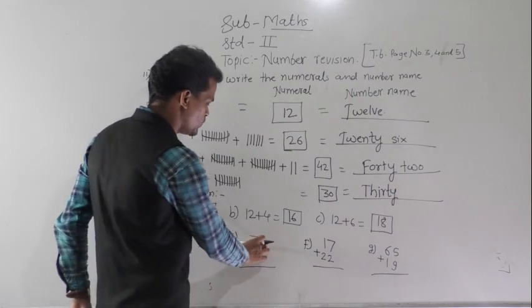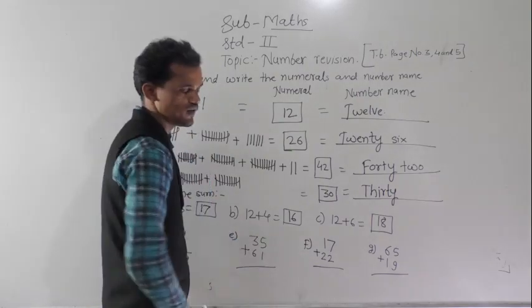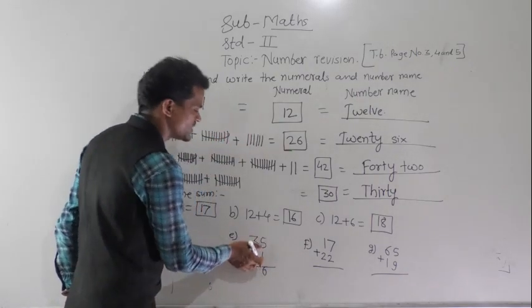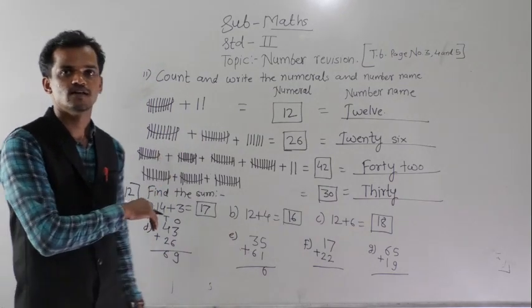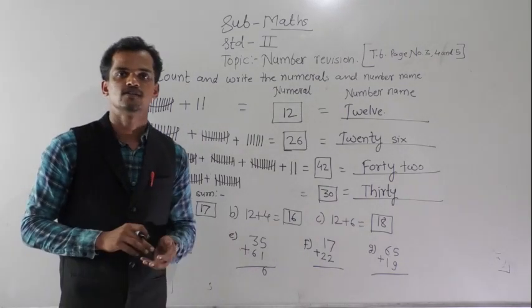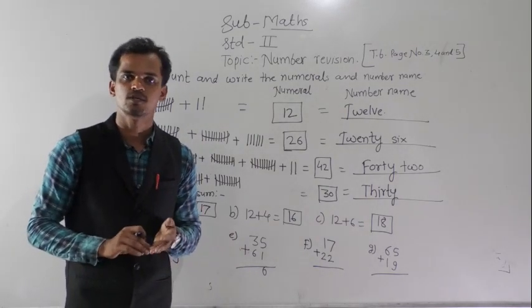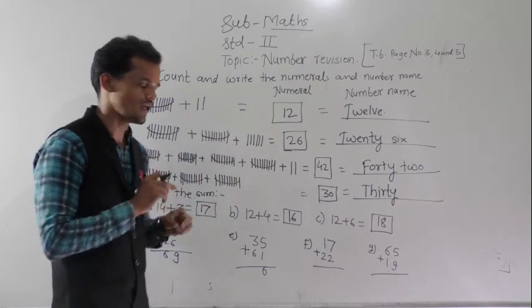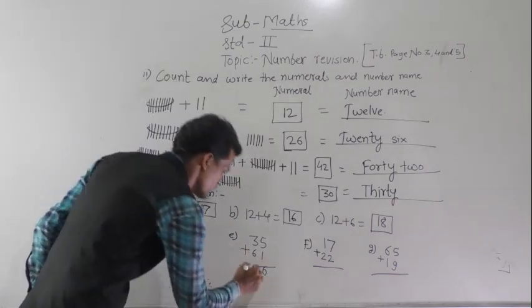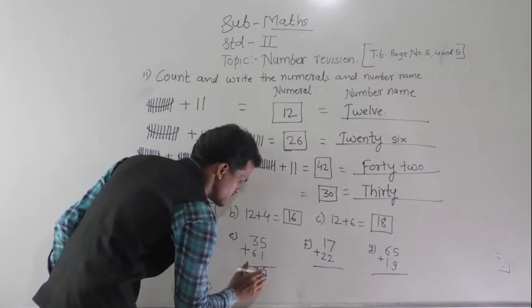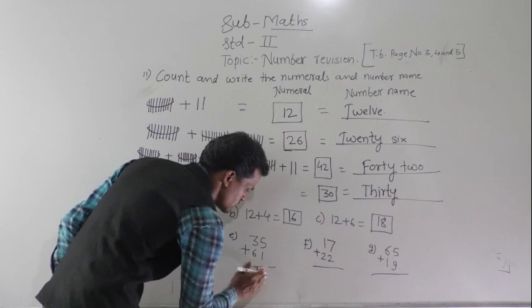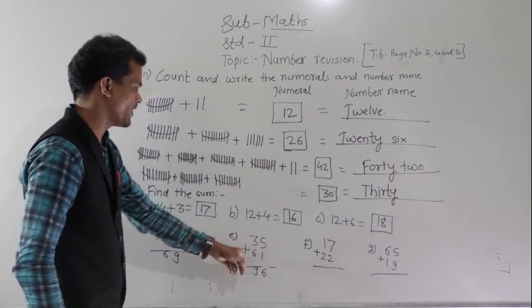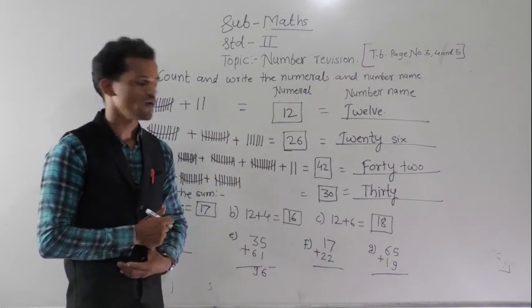Next: 5 plus 1 equals 6 in the ones column. And 3 plus 6 or 6 plus 3 — after 6, count 3 fingers forward: 7, 8, 9. So 96 is the sum of 35 and 61.